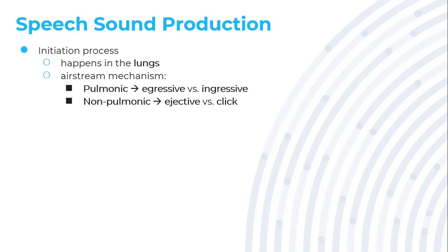The non-pulmonic mechanism means that there is very little or almost no air involved in speech production. This is very rare — only about 15% to 18% of the world's languages use this type, the ejective or click. The languages really sound like you are clicking your tongue. Mostly the languages that use this kind of airstream mechanism are languages in Africa. I'm going to link you to another video and upload it on Google Classroom if you want to watch it — it's optional. That is the initiation process, in which your lungs decide which airstream mechanism to use.